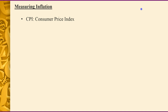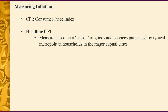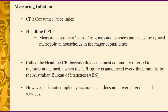Measuring inflation — the main measure is the CPI. Note that there are two types of CPI. There is the headline CPI: a measure based on a basket of goods and services purchased by typical metropolitan households in the major capital cities. It's called headline CPI because that's what you read in the newspaper — a CPI figure of, say, 3.5%, meaning inflation is going up by 3.5%. It is not a completely accurate figure because it does not cover all goods and services.